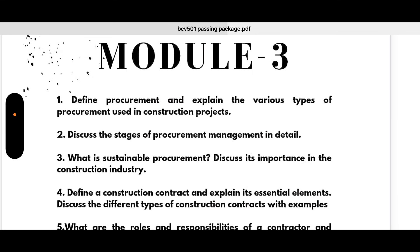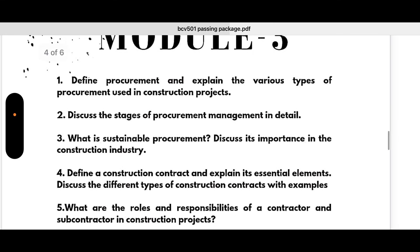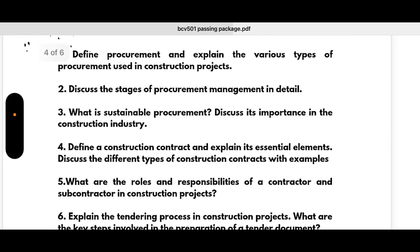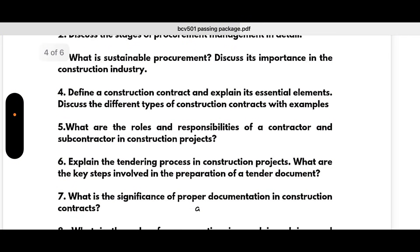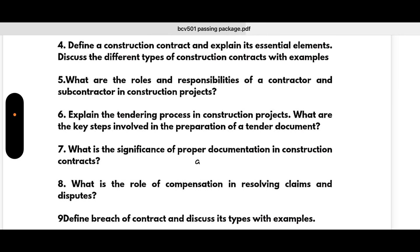Next: discuss the stages of procurement management in detail; what is sustainable procurement — discuss its importance in the construction industry; define a construction contract and explain its essential elements; discuss the different types of construction contracts with examples; what are the roles and responsibilities of a contractor and subcontractor in construction projects; explain the tendering process in construction projects and the key steps involved in preparation of a tender document.